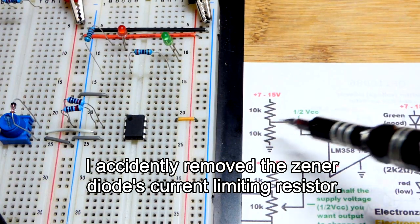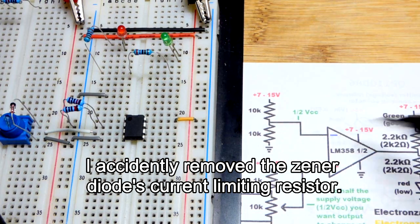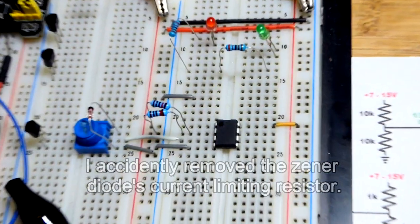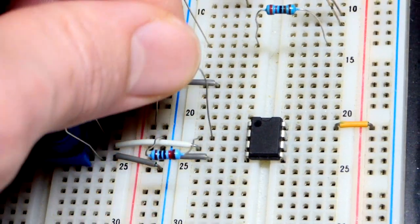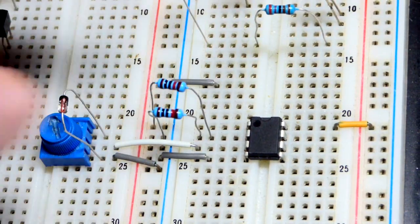Now we add our two equal value 10 kilo ohm resistors to the inverting input. Pretty straightforward right there. One of them to the negative supply, the other one to the positive supply.